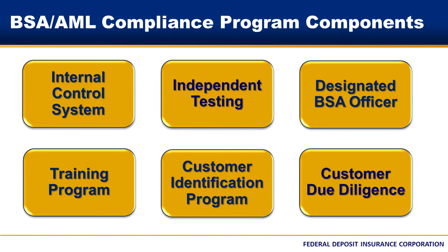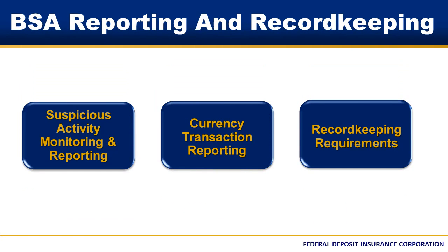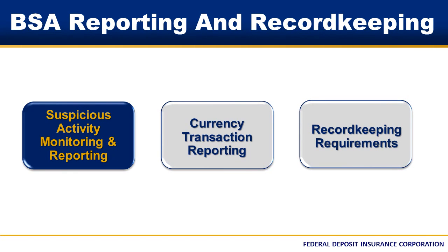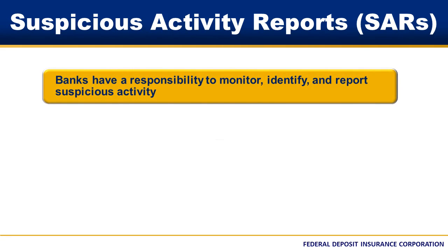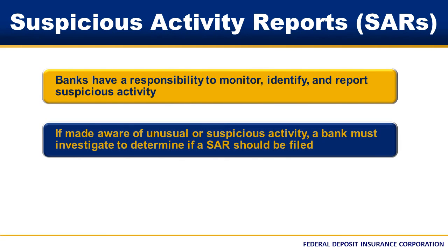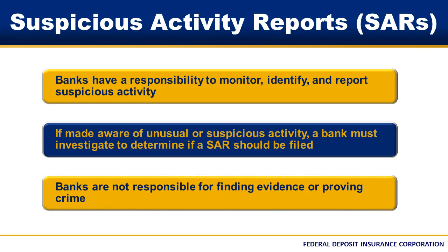We have just covered the six components that must be present for you as a director to meet your responsibilities for ensuring that the bank has an effective, risk-based BSA AML compliance program. The Bank Secrecy Act also establishes other regulatory requirements pertaining to suspicious activity monitoring and reporting, currency transaction reporting, and record-keeping requirements. Banks have a responsibility to monitor, identify, and report suspicious activities. If a bank becomes aware of an unusual or suspicious activity or transaction, bank staff must investigate further and determine whether a suspicious activity report, referred to as a SAR, should be filed. A bank is not responsible for finding evidence of or proving an underlying crime.